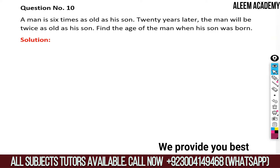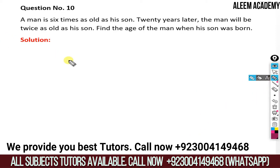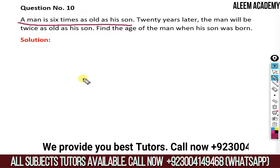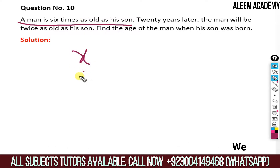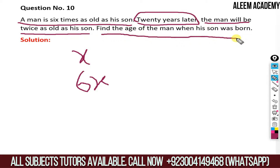Hello everyone and welcome to Arim Academy. The question is: a man is six times as old as his son. This means that if the son is x years old, then the man will be six x years old. 20 years later, the man will be twice as old as his son. We have to find the age of the man when his son was born.